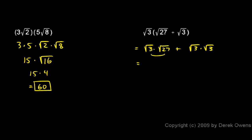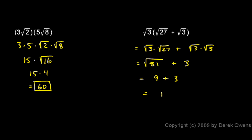Well, 3 times 27 you might know is 81, so this is just like saying the square root of 81. And here I have the square root of 3 squared, which is just the square root of 9, or the square root of 3 squared is just 3. And you recognize the square root of 81 is equal to 9, so this is 9 plus 3, which is 12.